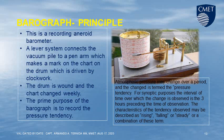Our next topic is the barograph principle. A barograph is a recording aneroid barometer. A lever system connects the vacuum cell to a pen arm which makes a mark on a chart on a drum driven by clockwork. The drum rotates and the chart changes weekly. The prime purpose of the barograph is to record the pressure tendency. Atmospheric pressure may change over a period, and this change is termed the pressure tendency.